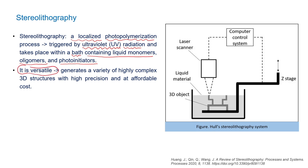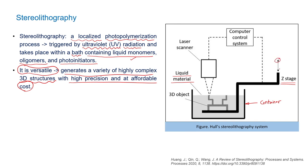This process is versatile and can generate a variety of highly complex 3D structures with very high precision at affordable cost. On the right side you can see a typical arrangement of stereolithography. There is a container with a bath of monomers, oligomers, and photoinitiators inside. A stage moves along the Z direction — vertically up and down. A CNC-based laser scanner irradiates the surface.